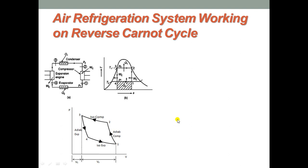This drawback made the system practically obsolete. However, today it again finds application in aircraft refrigeration due to its low weight and volume requirement. Air refrigeration system works on two cycles: one is the reversed Carnot cycle, and another is the reversed Brayton cycle, also called the Bell-Coleman cycle. In this session, we will discuss air refrigeration system working on reversed Carnot cycle.